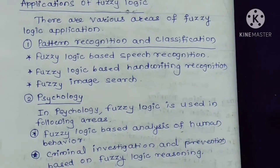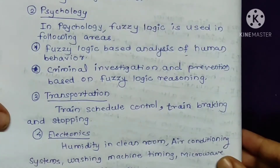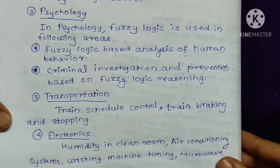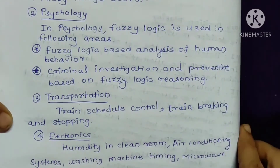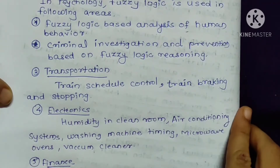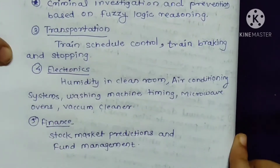Various areas related to image processing are available, such as image enhancement. The next area is psychology — fuzzy logic is used for analysis of human behavioral characteristics. Criminal investigation and prevention can also be done based on fuzzy logic.